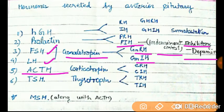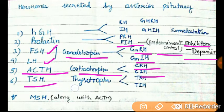The next hormone is ACTH, that is adrenocorticotropin, which is under the control of releasing and inhibitory hormones. TSH, meaning thyrotropin, is also under the control of releasing and inhibitory hormones.